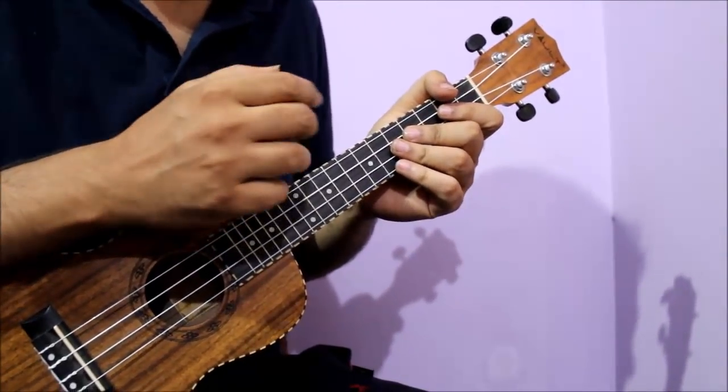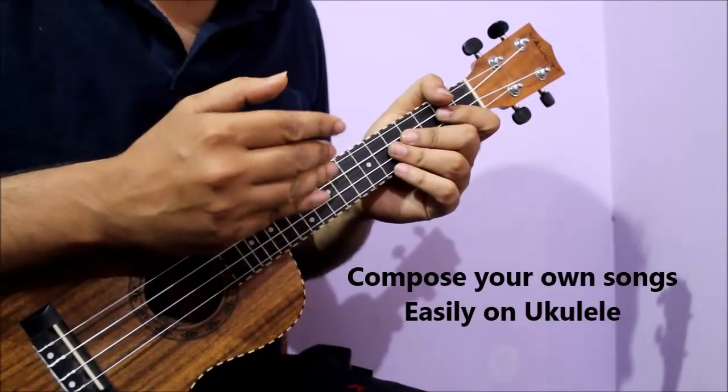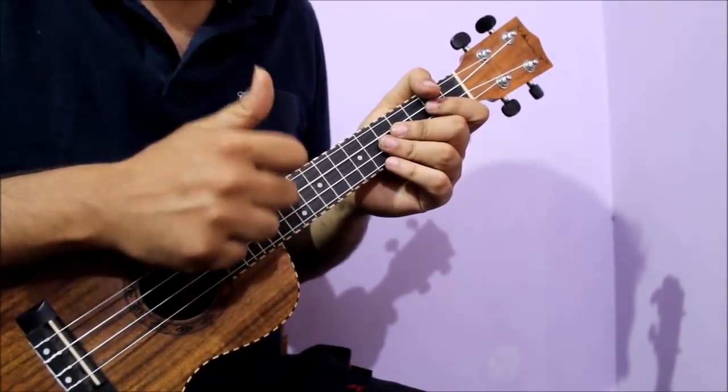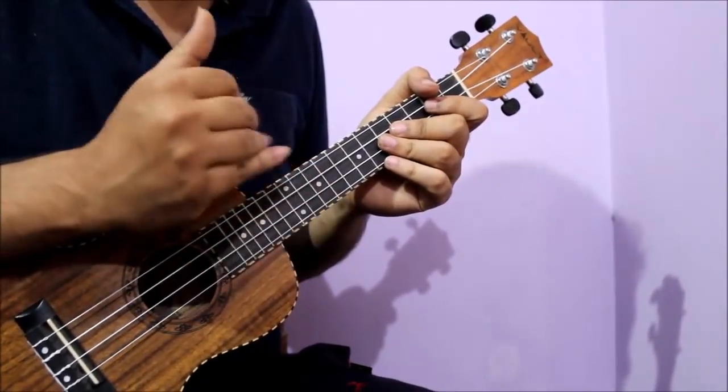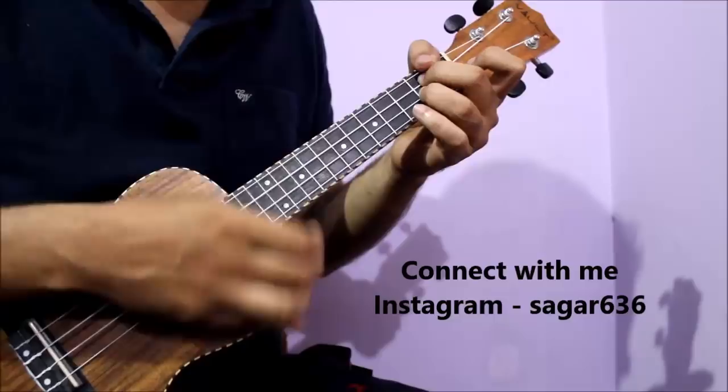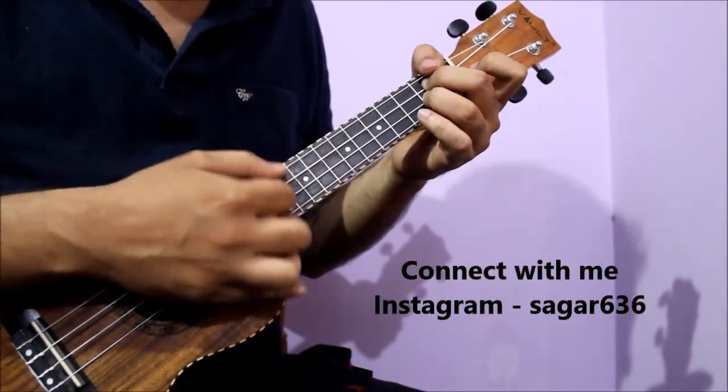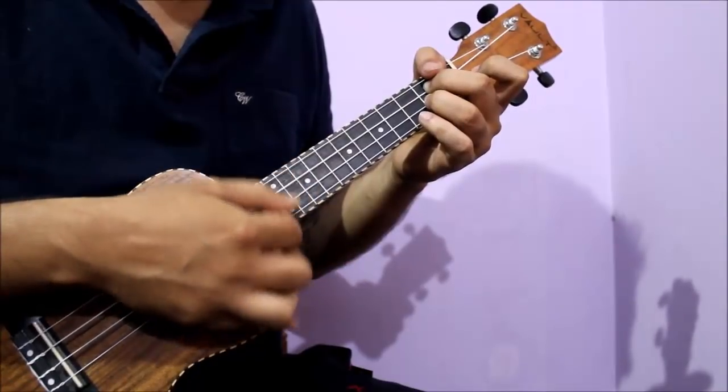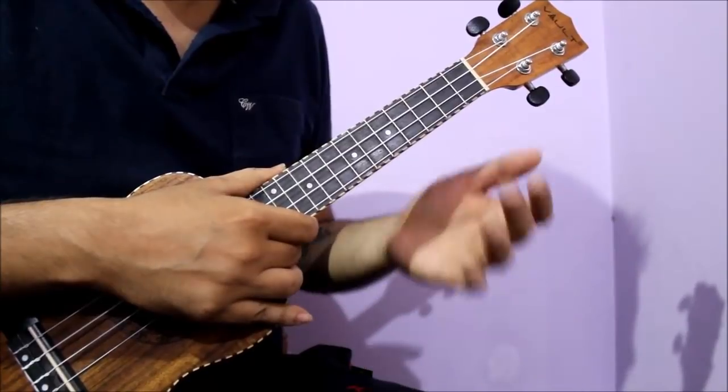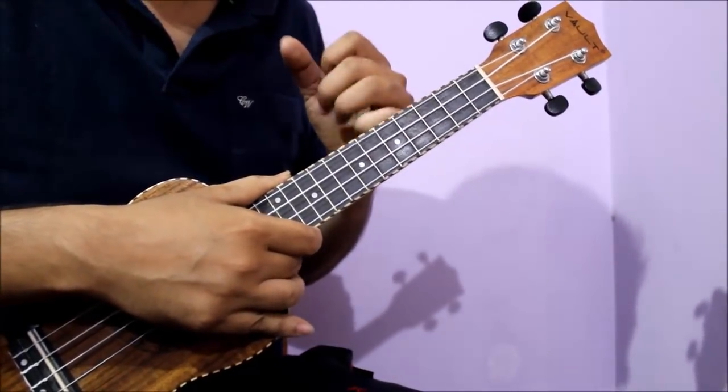Today we will learn how to do composition on the ukulele. This lesson can be followed with music theory knowledge. I will show you a logic that you can use for composition. For example, you can play a chord in D major and you're making a chord, but you don't understand what chord should come next. So today's lesson will help you understand how to do composition in the ukulele.